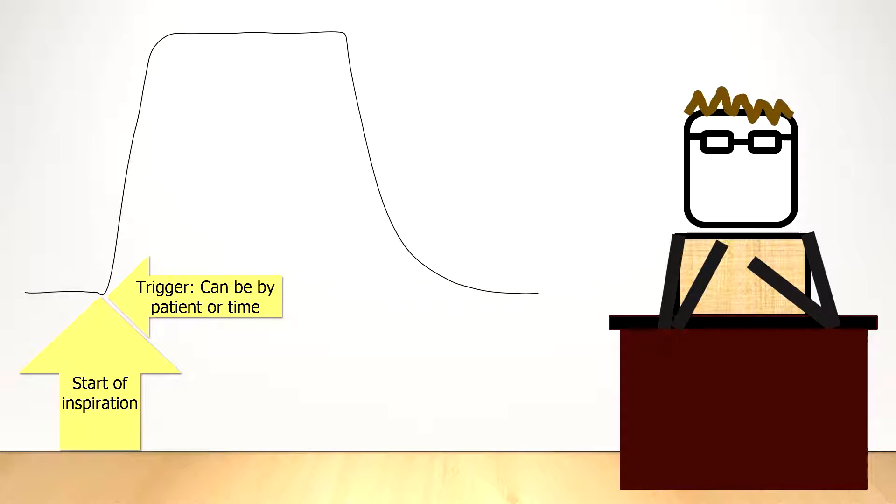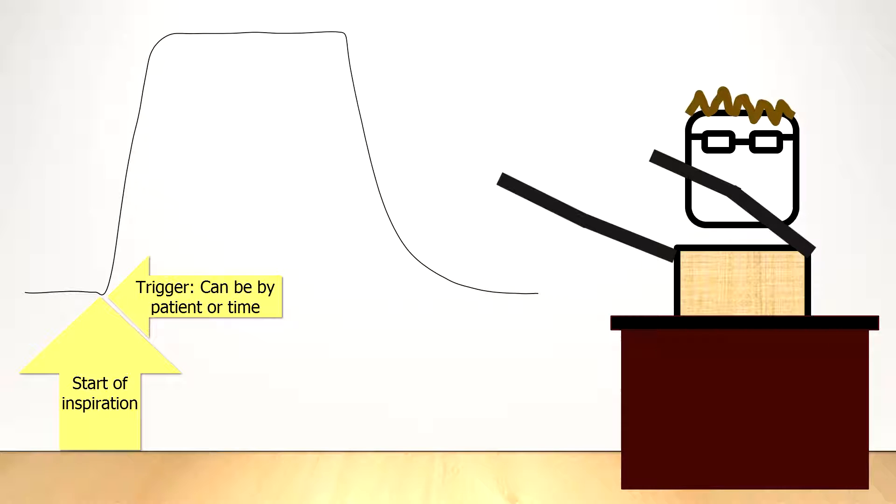The ventilator can also automatically deliver a breath if the patient doesn't trigger, or is unable to trigger, because of the effects of medications like neuromuscular blockade or sedation. The trigger in this case, then, is time. The ventilator measures the amount of time it has been since the last breath, and if it is beyond the limit, will initiate the next breath.